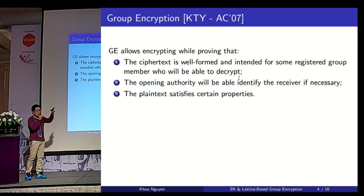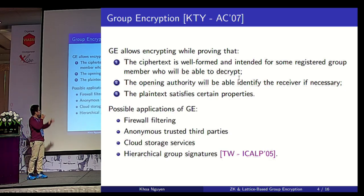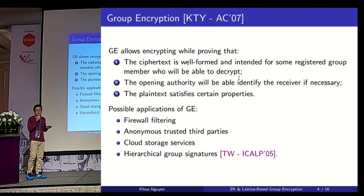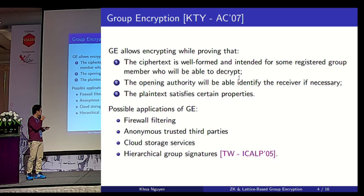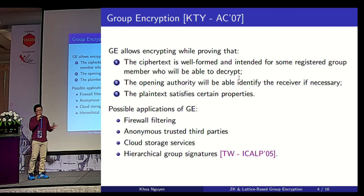The opening authority should be able to identify the receiver should the need arise. The plaintext should satisfy some properties, like being a witness for a public relation or being a private key for a given public key. This additional requirement may be useful for spam protection. Some possible applications of group encryption are in the context of filtering for anonymous strategic third parties in cloud storage services. Group encryption also implies hierarchical group signatures, which is a general form of group signatures.